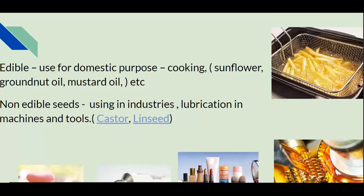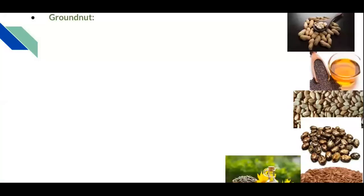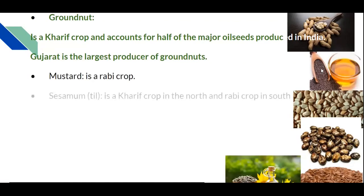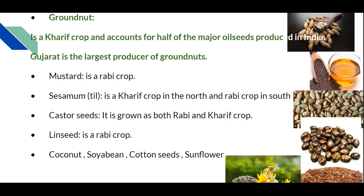Different oil seeds cover approximately 12 percent of the total cropped area of India. Groundnut is a Kharif crop and accounts for half of the major oil seeds produced in India — Gujarat is the largest producer. Mustard is a Rabi crop. Sesame is a Kharif crop in north India and a Rabi crop in south India. Castor seeds grow in both Rabi and Kharif seasons. Linseed is a Rabi crop. Coconut, soybean, cotton seed, and sunflower are other examples of oil seeds.